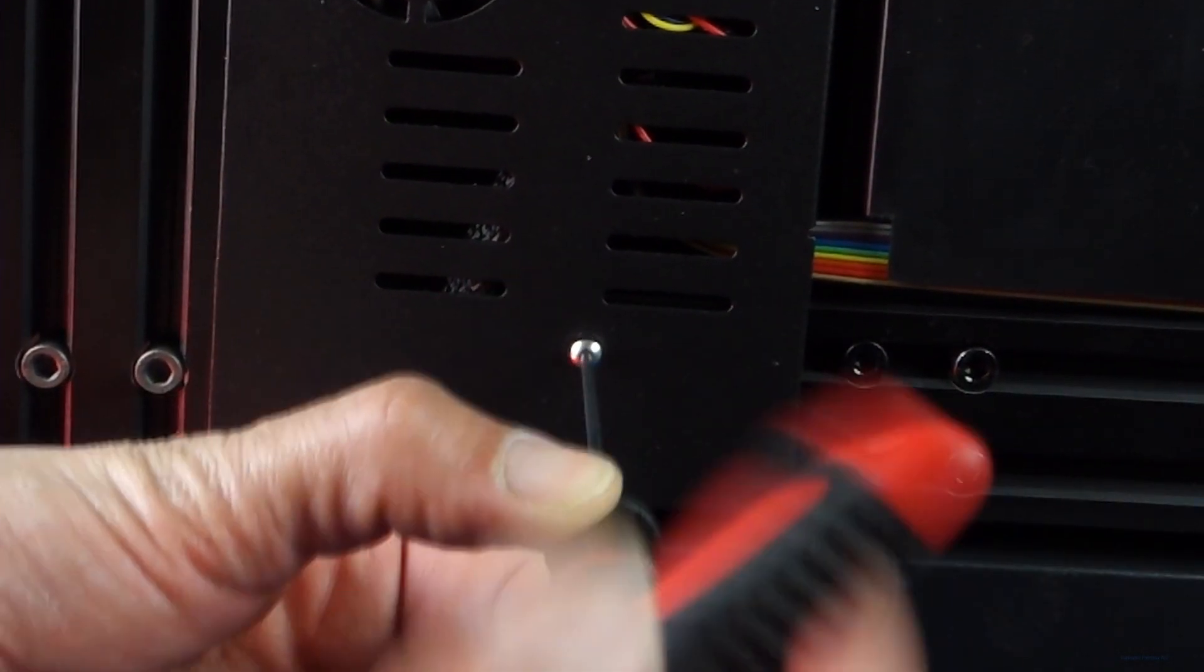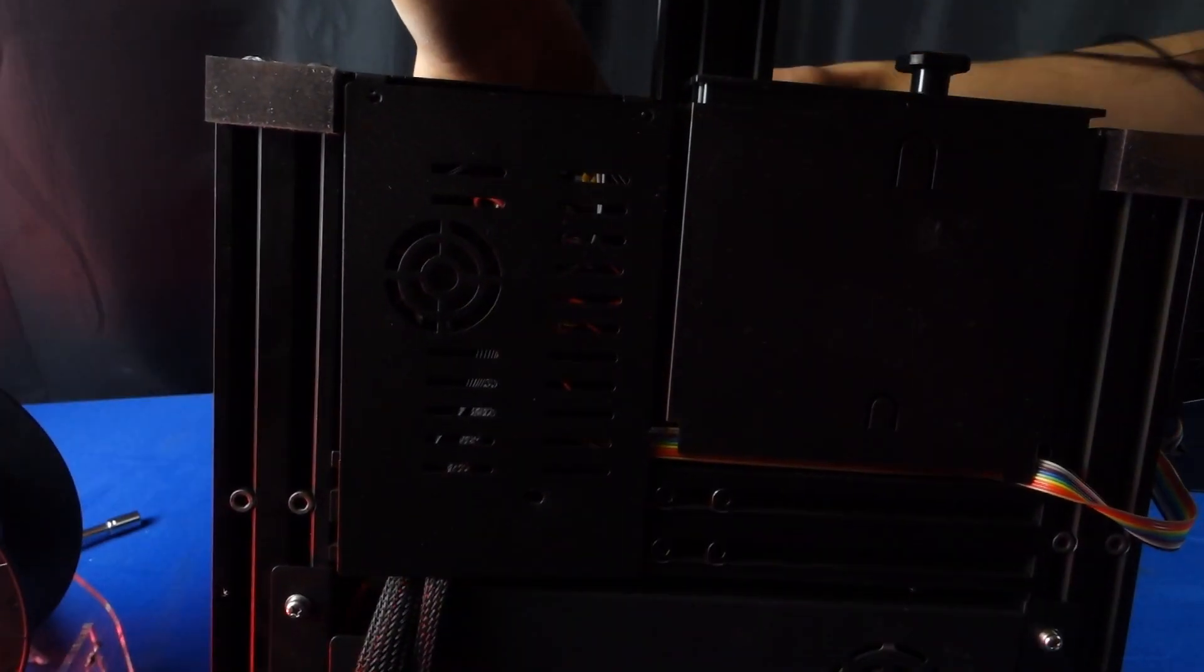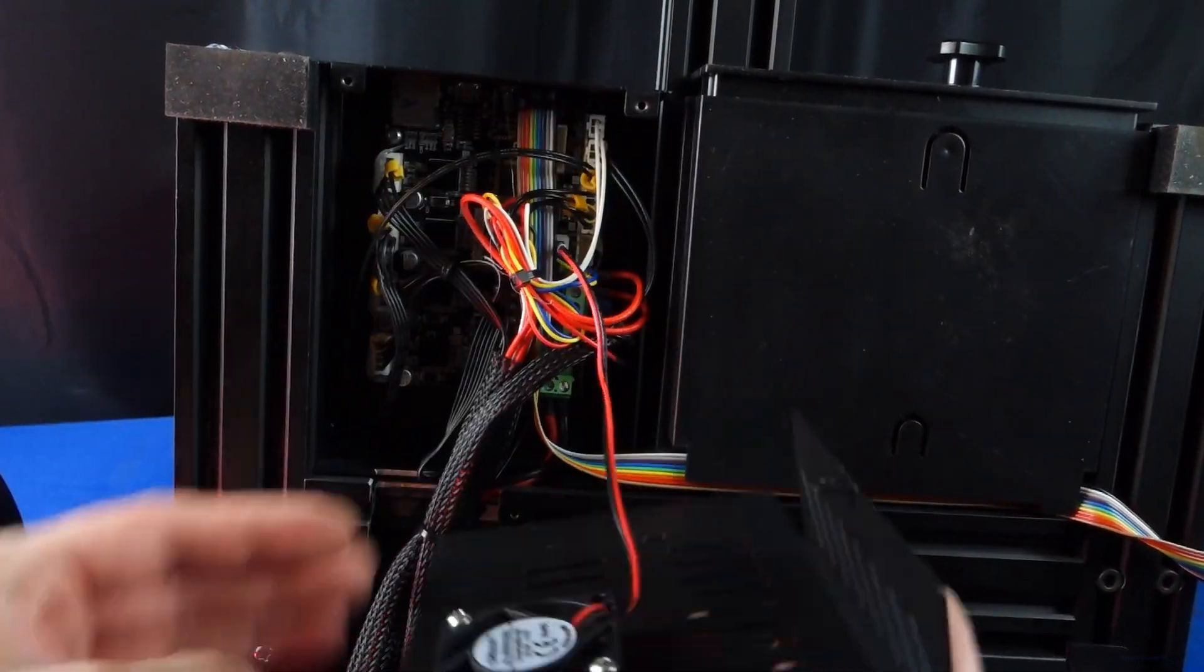There's four screws holding the cover in place so you'll want to remove all of these to get to the motherboard. One of the screws is located on the other side of the machine, so make sure to remove all of these before opening the cover.